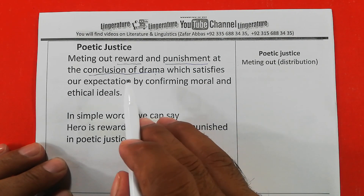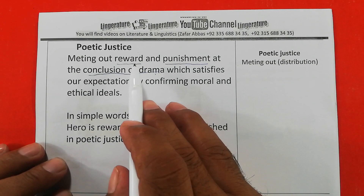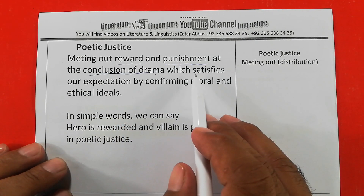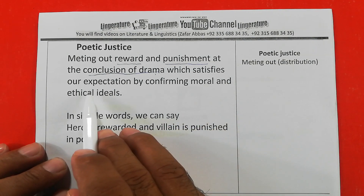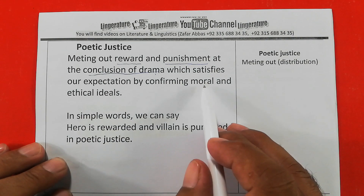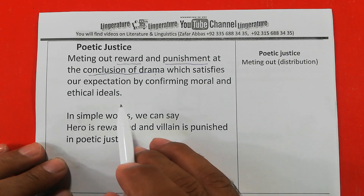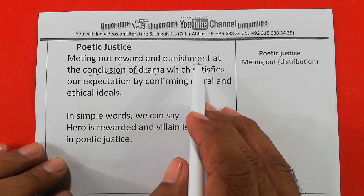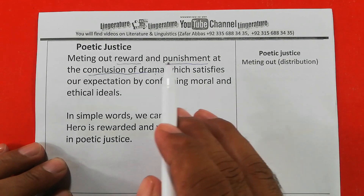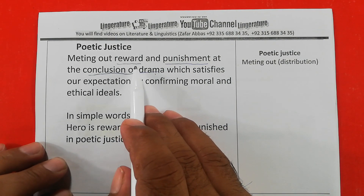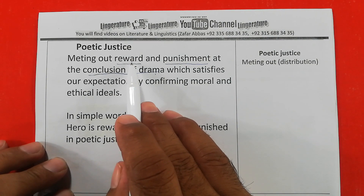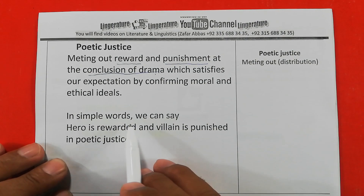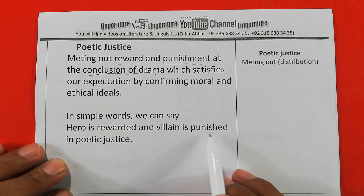So what is poetic justice? Poetic justice is when, at the end of the drama, the playwright or writer gives reward or punishment to the characters, which satisfies our expectations about moral and ethical ideals. If a bad person is there, he or she is punished by the writer; if the character is good, they get the reward. In simple words: the hero is rewarded and the villain is punished.